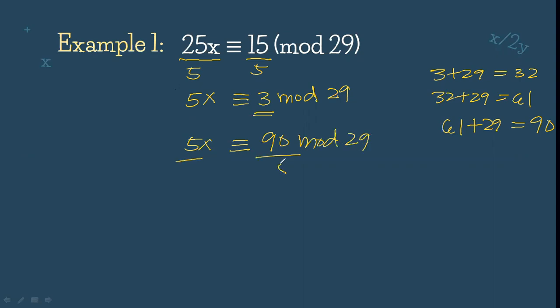Divide both sides by 5. That will give us x equals 90 divided by 5, which gives us 18. 18 mod 29, or simply 18. So x will be 18. That's the answer.